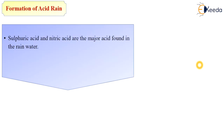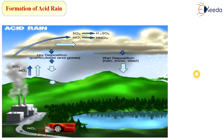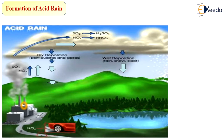Sulfuric acid and nitric acid are the major acids found in acid rain. The proportion of sulfuric acid ranges from 60 to 70%, and that of nitric acid is 30 to 40%, but both acids are dangerous to human structures and the surrounding environment. The sources of emission of sulfur dioxide and nitrogen dioxide are primarily from industrial plants.